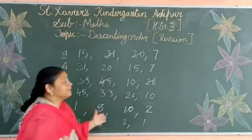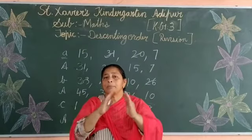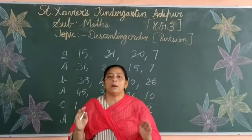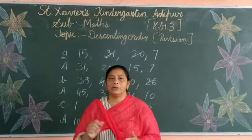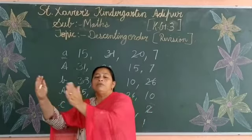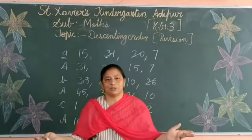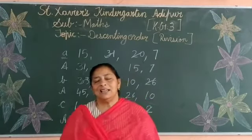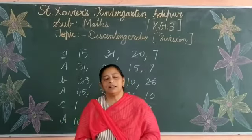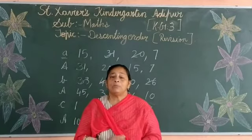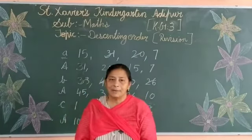Okay students, descending order means from bigger number to smaller number. Whatever numbers are given, you have to find the biggest number first, then write them in order — biggest first, then smaller, then smaller, then the smallest last. Descending means bigger number to smallest number. I hope you all understood this. You have to keep practicing in your notebook daily.